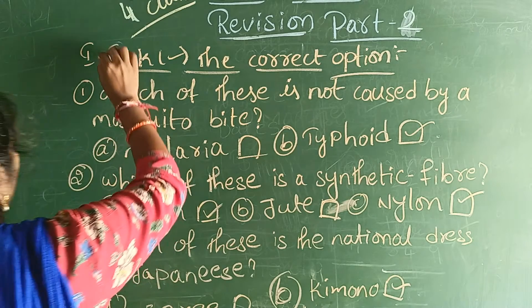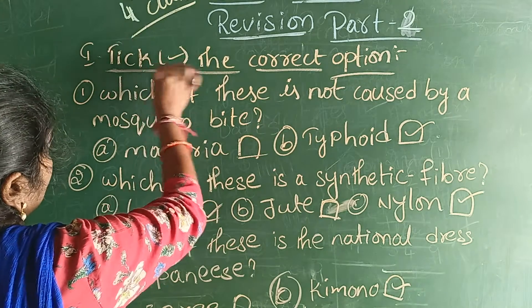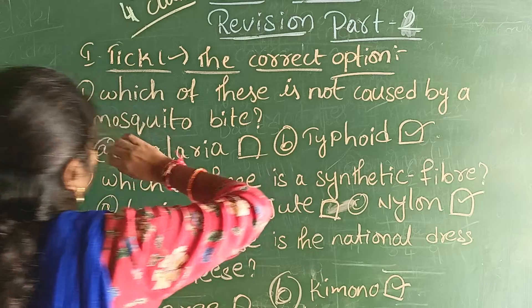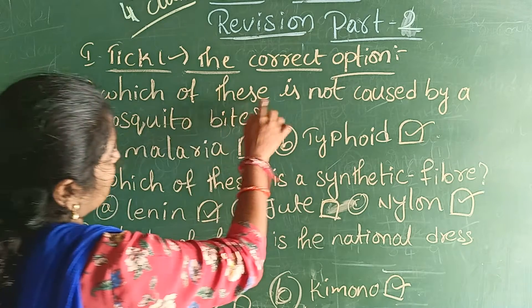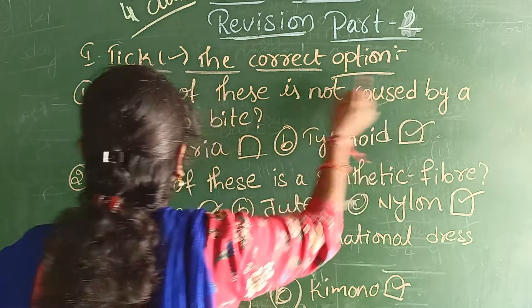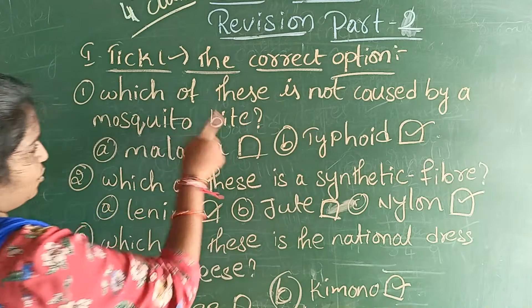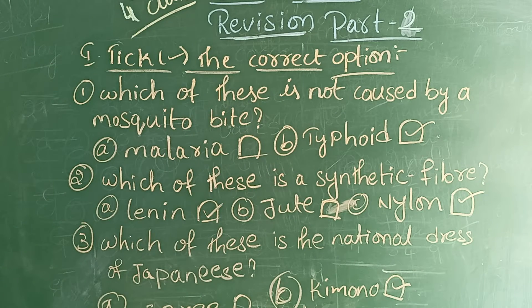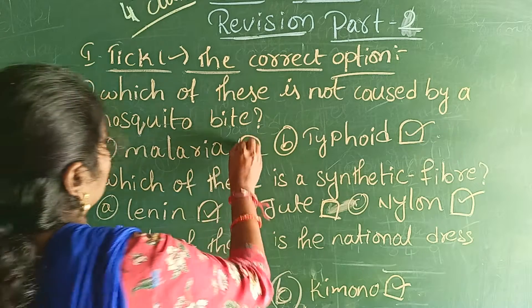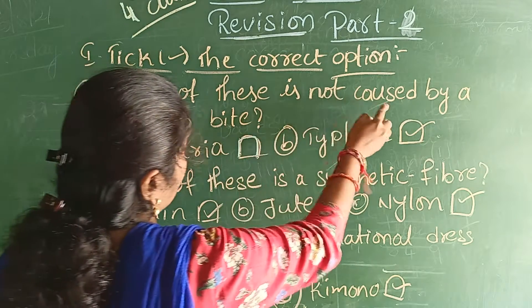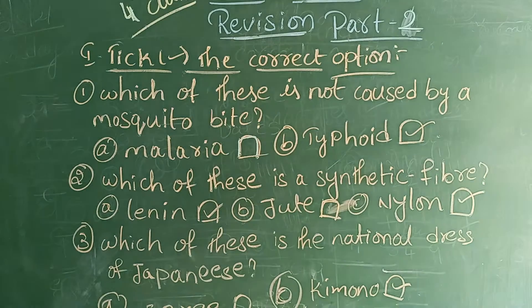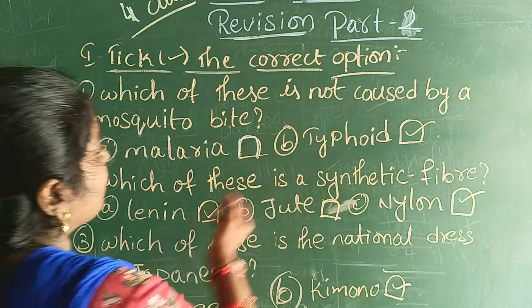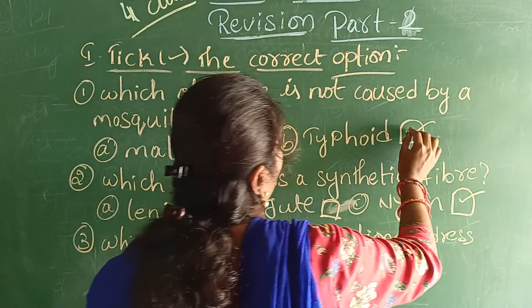Under the revision, I will explain to you first with multiple choice questions. Which of these is not caused by mosquito bite? Mosquito bite — diseases caused by mosquito. This is Typhoid.